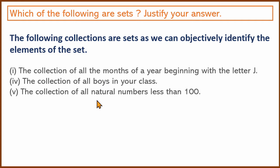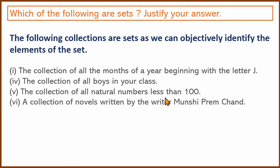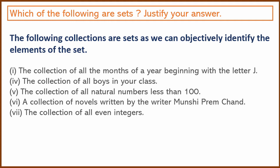The collection of all natural numbers less than 100 — natural numbers start from 1, 2, 3, 4 and so on, less than 100. The collection of novels written by Munshi Premchand is also the same regardless of who answers. The collection of all even integers — even though it is an infinite set, the collection is still objectively the same.